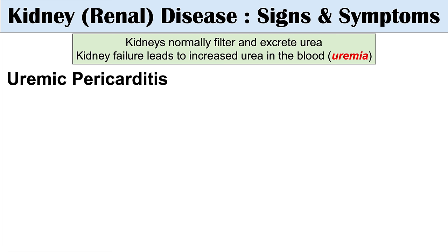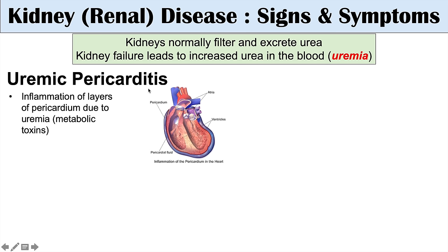One of them is uremic pericarditis. Uremia can lead to pericarditis — inflammation of the pericardium. The uremia, along with other metabolic toxins, can cause inflammation of the layers of the pericardium. We can see patients having chest pain, often positional and pleuritic as well.